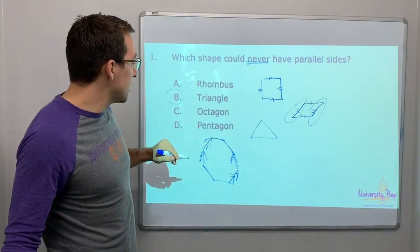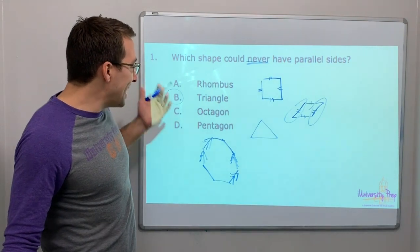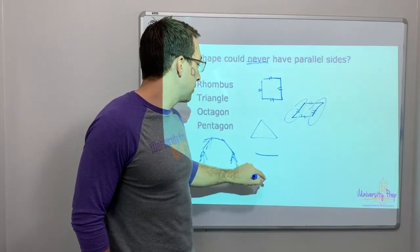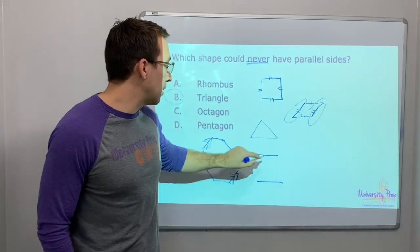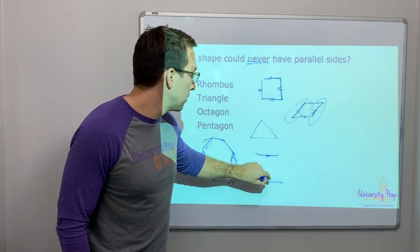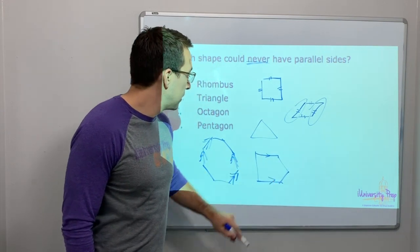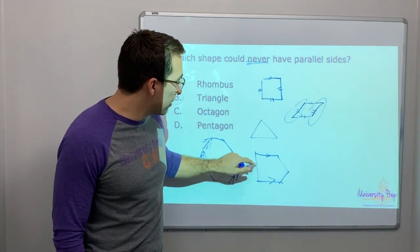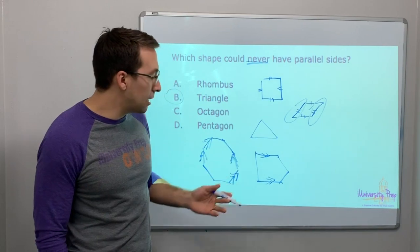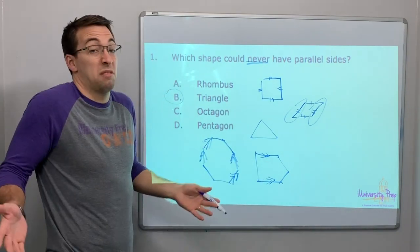A pentagon could have parallel sides. Let's say that those are parallel, and you have like this. These two top and bottom are parallel lines, and it has five sides, so that's a pentagon.